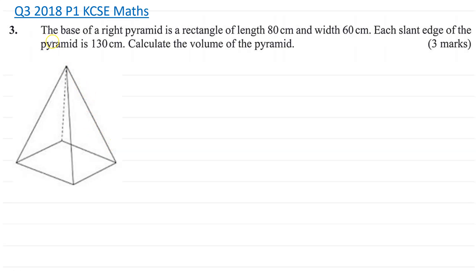So the question says the base of a right pyramid is a rectangle of length 80cm and width 60cm. Each slant edge of the pyramid is 130cm. This underlined slant there and we are asked to find the volume of the pyramid.